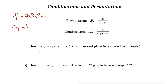Let's look at these two examples. How many ways can first and second place be awarded to 8 people? Here, first and second place are different, so order matters. We need to use the permutation formula. Here n is 8, and since we're choosing two people for first and second place, k is 2.